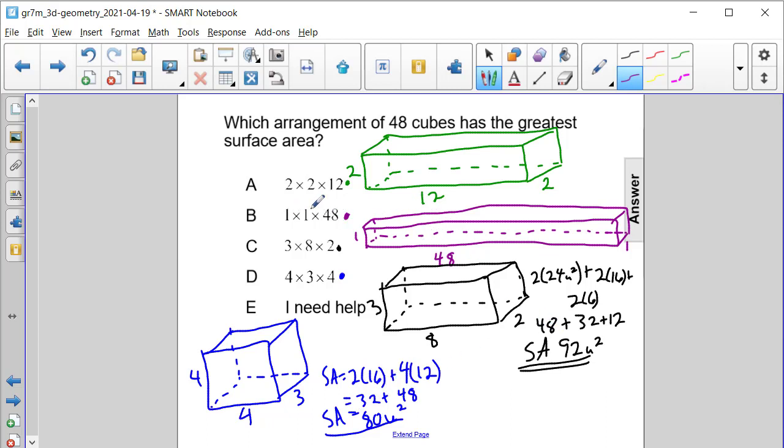Now let's look at the 1 by 1 by 48. Well the 1 by 1 by 48 has two faces, the left and right, that have an area of one square unit plus four faces, the front back top and bottom they all have an area of 48 times 1 which is 48. So we're gonna have two square units plus 192 square units or 194 square units for this entire surface area of the purple one.